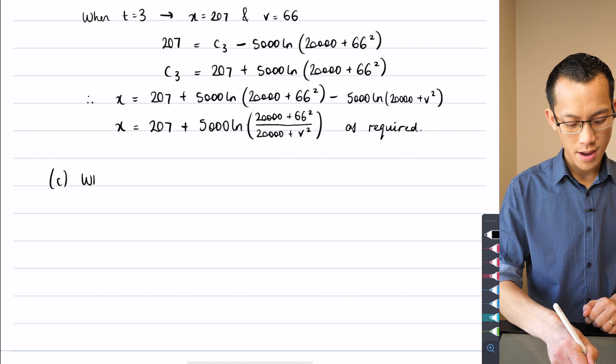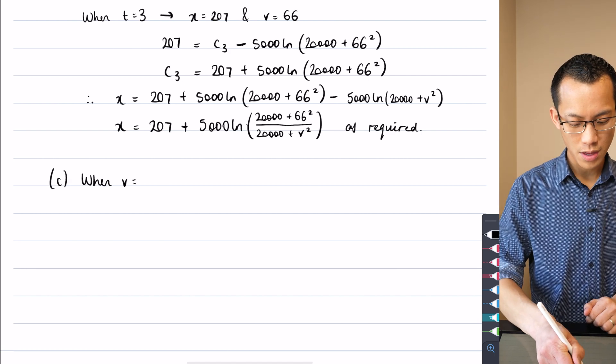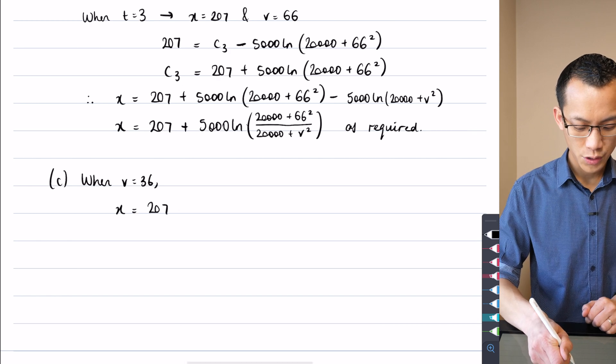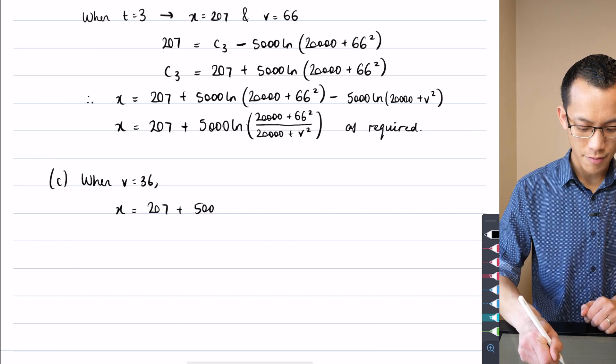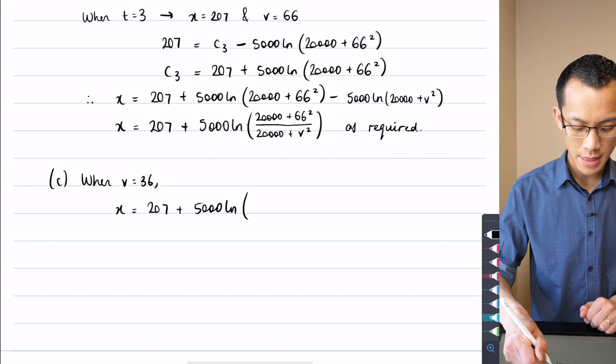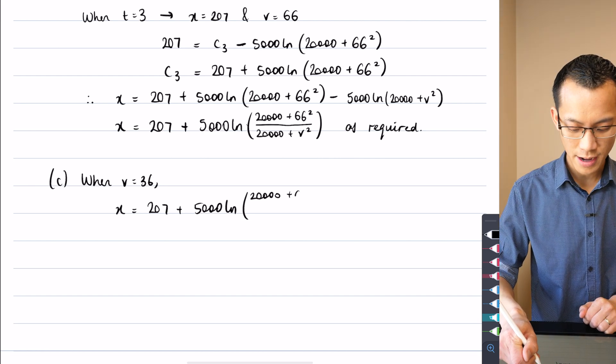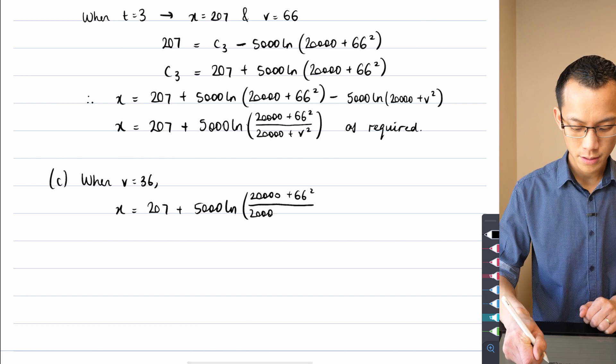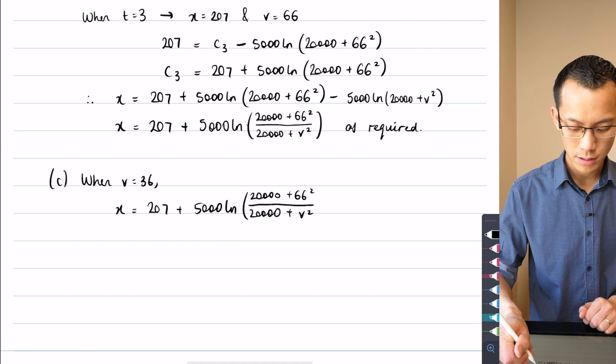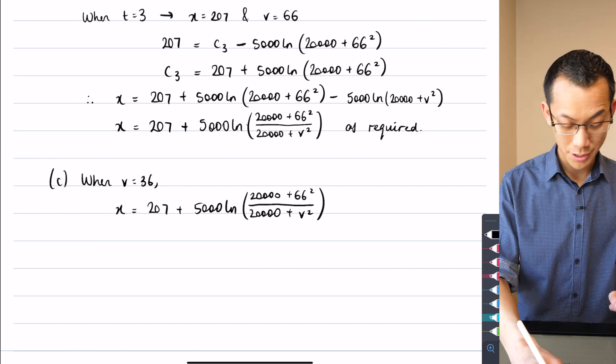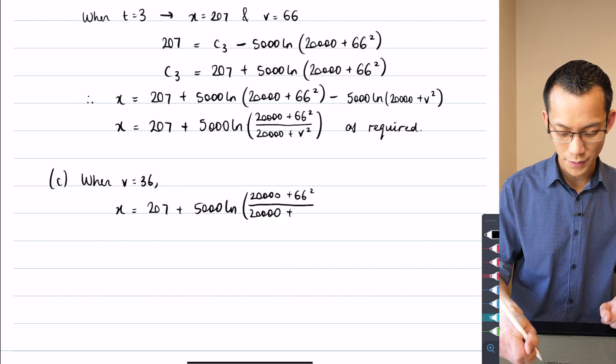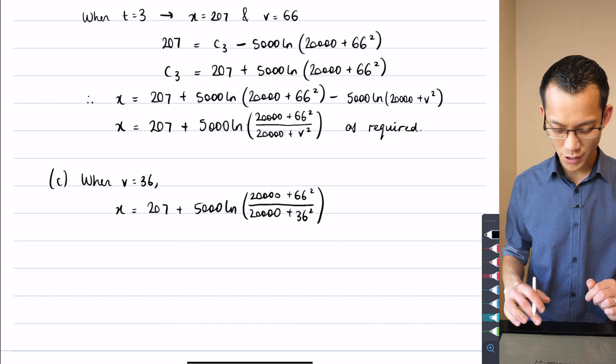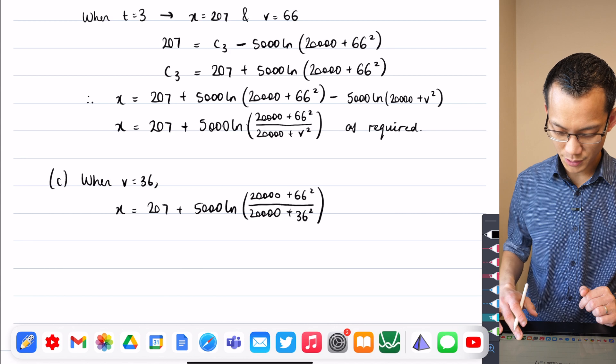So I'm going to say when V equals 36, X is going to be equal to 207 plus 5,000 log of, and then this seems to me like a whole lot of calculator work. So let's go ahead and pop this in here first, plus V squared. Sorry, not V squared. I've got to substitute value for V, which is 36. So it's 36 squared down there.